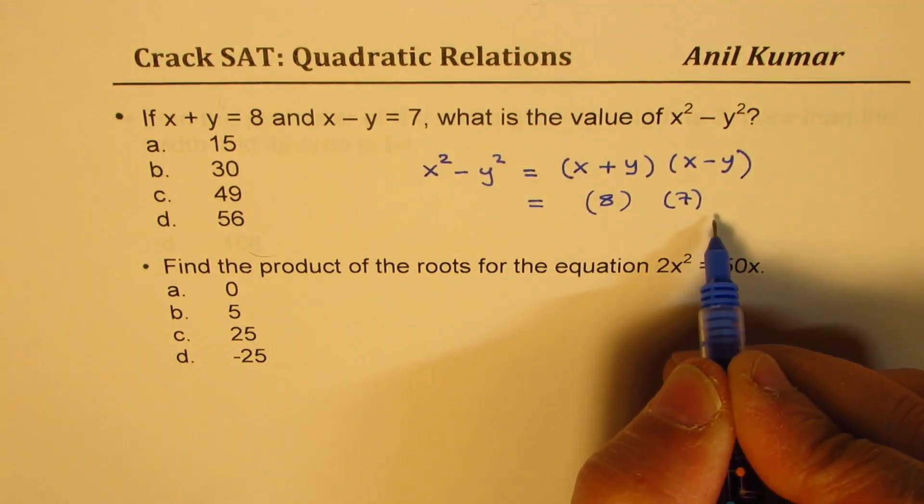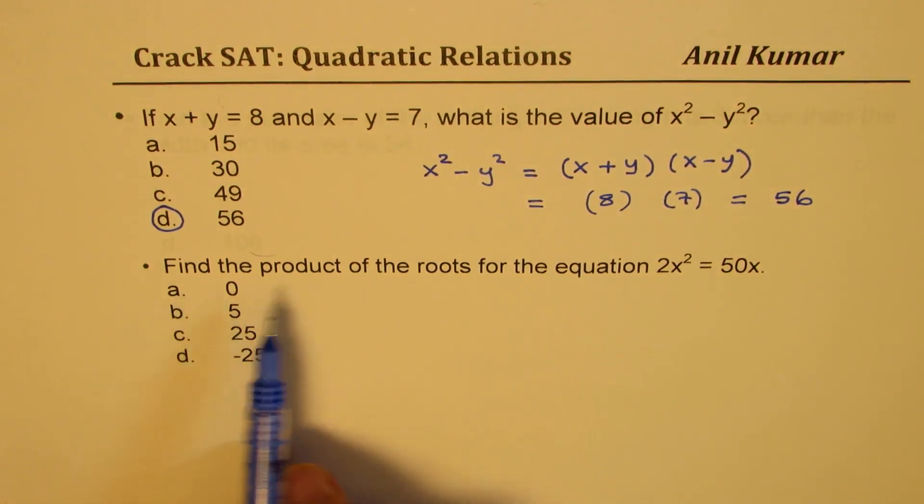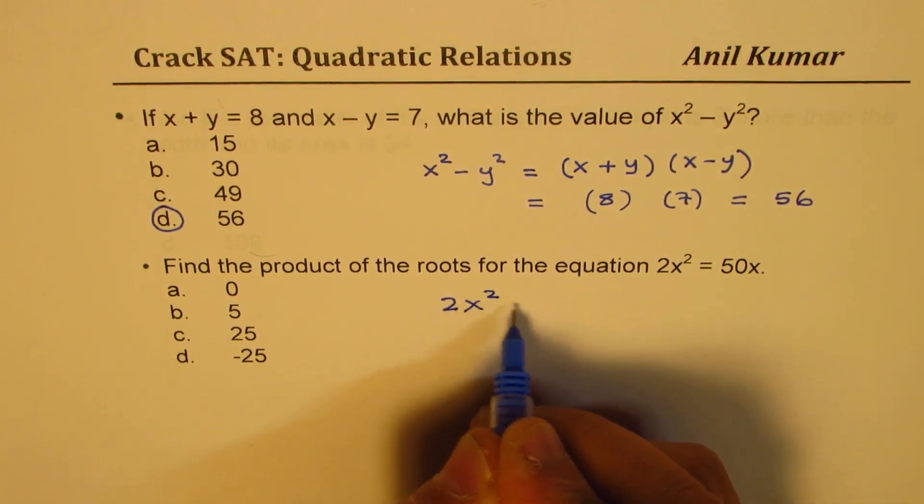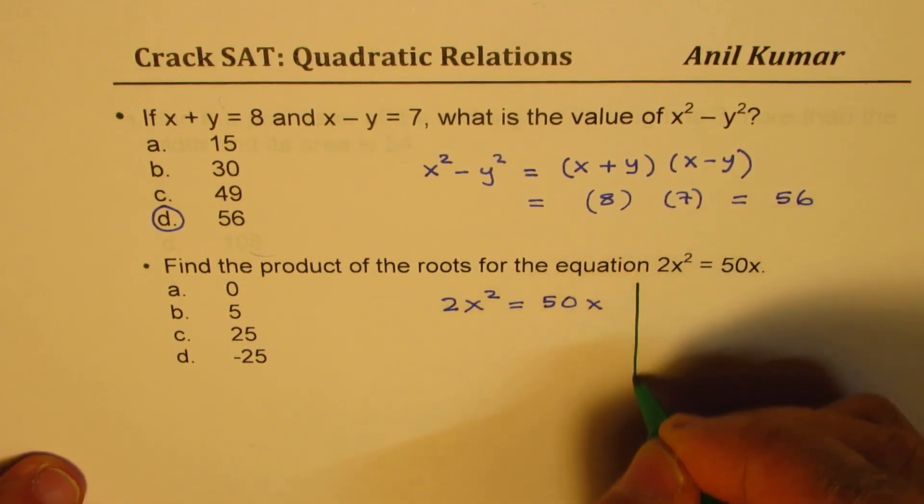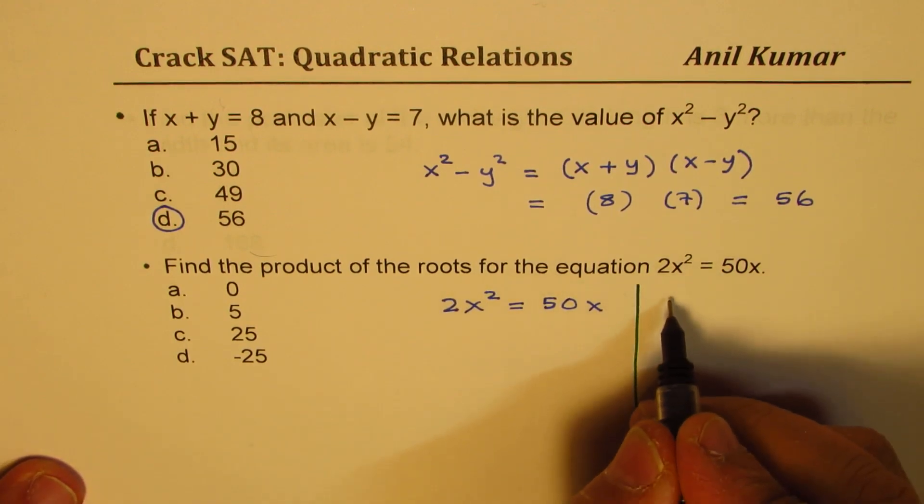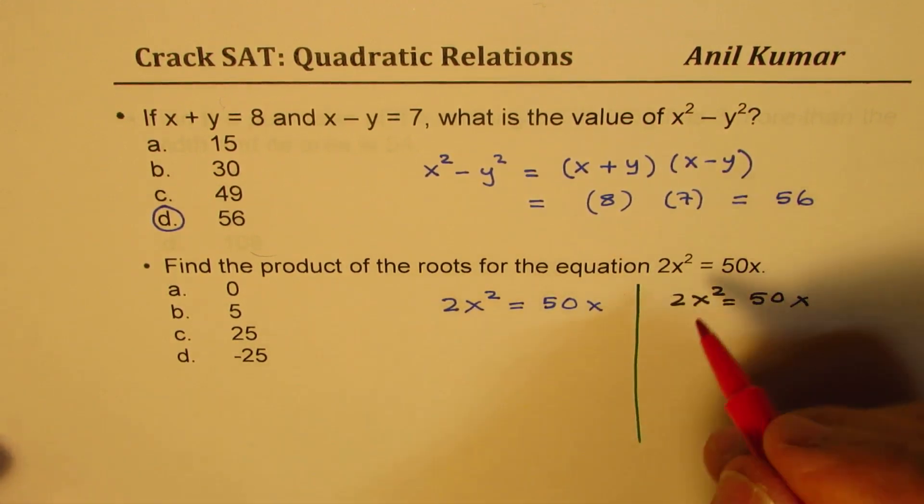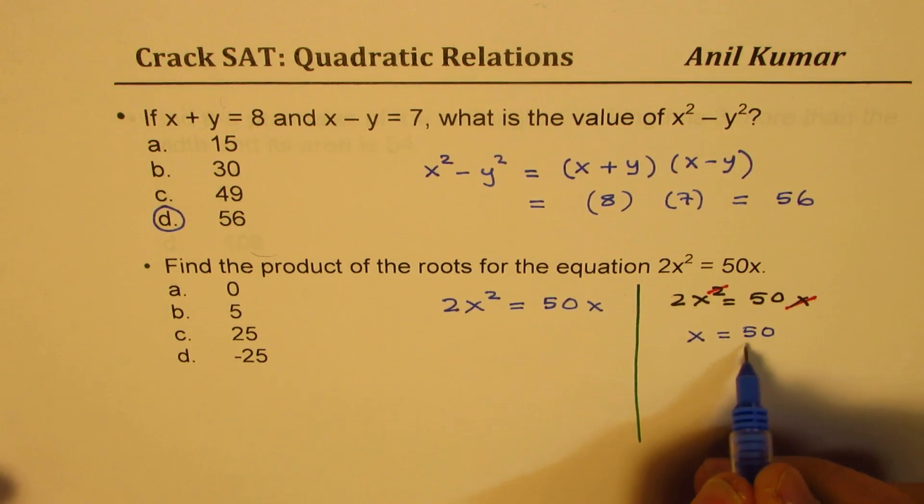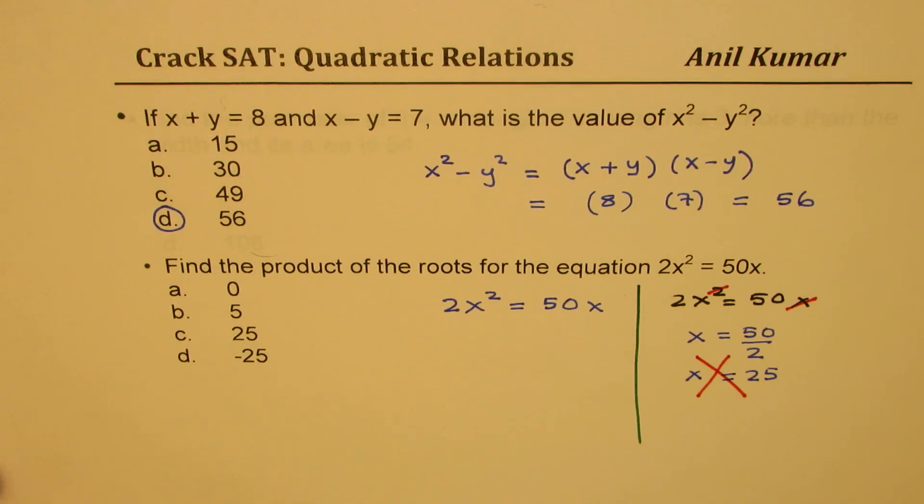Second, find the product of roots for the equation 2x squared equals 50x. Now when you have equations like this, what you should not do should be shown here. So let me first give you a solution which you should not do. So some students might do this: when you're given like this, they might cancel one of these x values, and they may get x equals 50 divided by 2, or x equals 25, and they may write 25 as their answer. But that will be a wrong answer. The reason? Well, you omitted one of the roots, which was x equals 0.